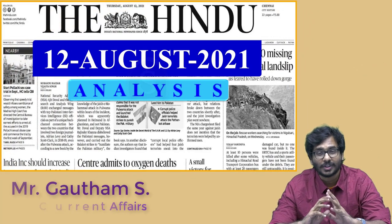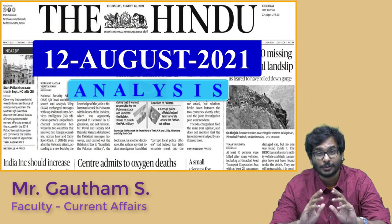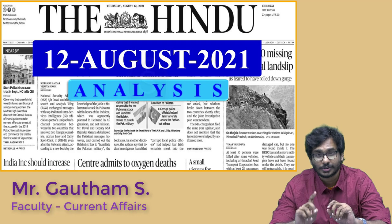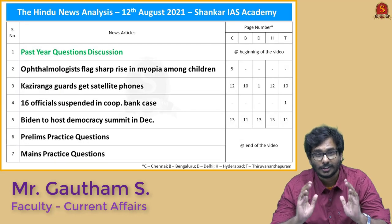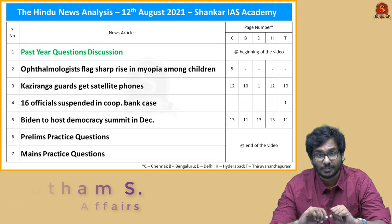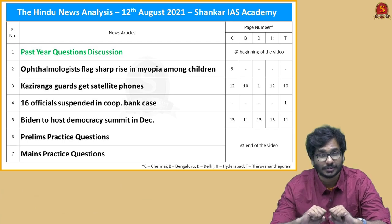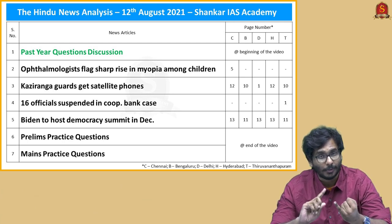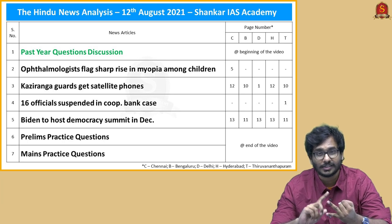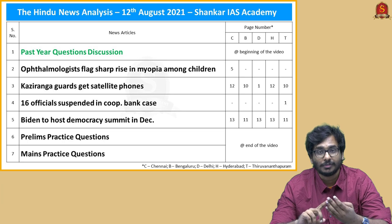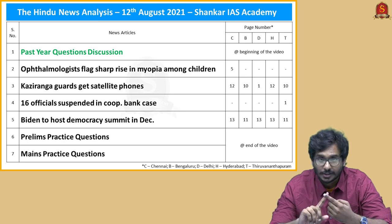Hello friends, welcome to Shankarai's Academy Indian News Analysis. Today's date is 12th August 2021. The list of topics is displayed on the screen. In today's discussion we are going to solve four past prelims questions. In article discussion we are going to discuss about myopia, Kaziranga National Park, cooperative banks, and finally democracy summit.